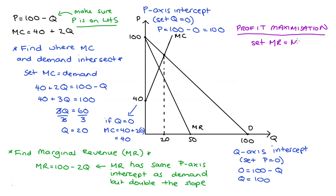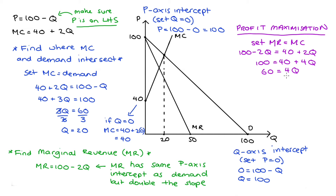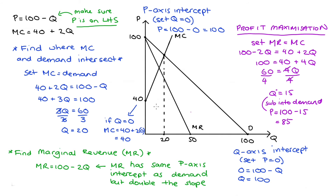The next step is to find the profit-maximizing level of production by setting marginal revenue equal to marginal cost: 100 minus 2Q equals 40 plus 2Q. Adding 2Q to both sides gives 100 equals 40 plus 4Q. Taking away 40 gives 60 equals 4Q, and dividing by 4 gives Q equals 15. Substituting Q equals 15 into the demand curve: P equals 100 minus 15, so P equals 85. The monopolist sells 15 units at $85 each — that's the profit-maximizing output.